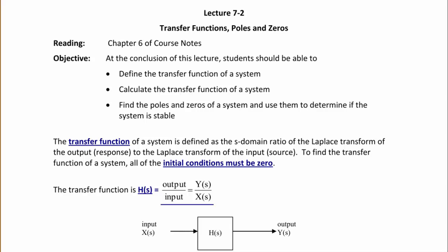Today's lecture will focus on transfer functions, poles, and zeros. Students should be reading Chapter 6 of the course notes. At the conclusion of this lecture, students should be able to define the transfer function of a system, calculate the transfer function of a system, find the poles and zeros of a system, and use them to determine if the system is stable.